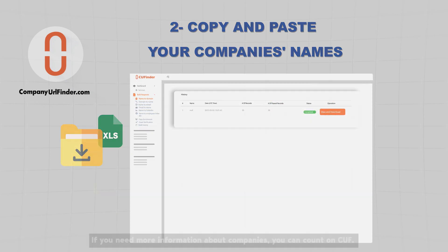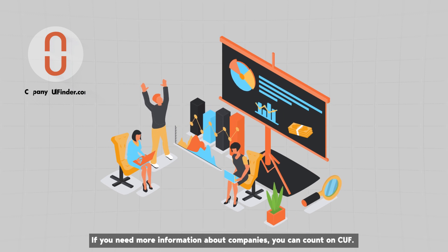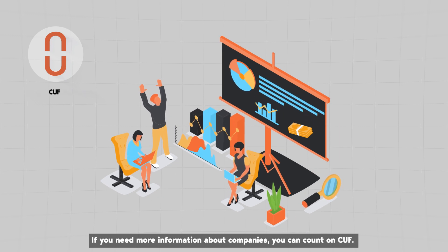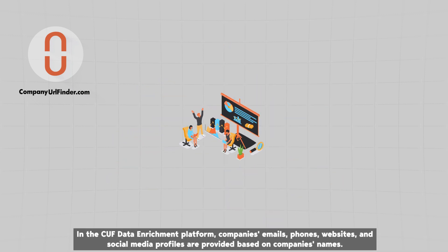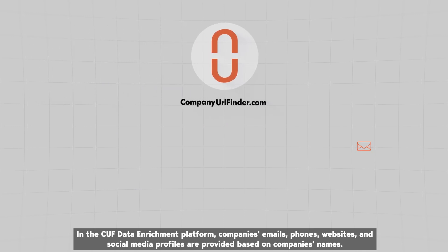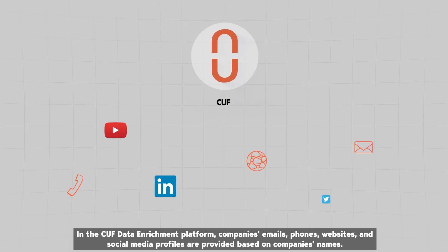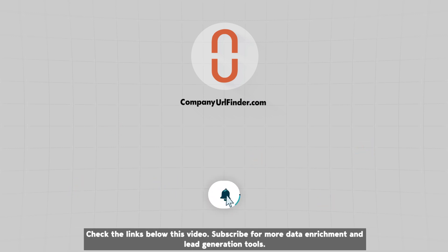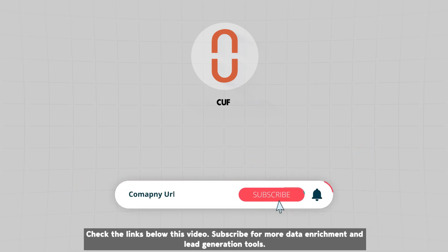If you need more information about companies, you can count on CUF. In the CUF data enrichment platform, company emails, phones, websites, and social media profiles are provided based on company names. Check the links below this video and subscribe for more data enrichment and lead generation tools.